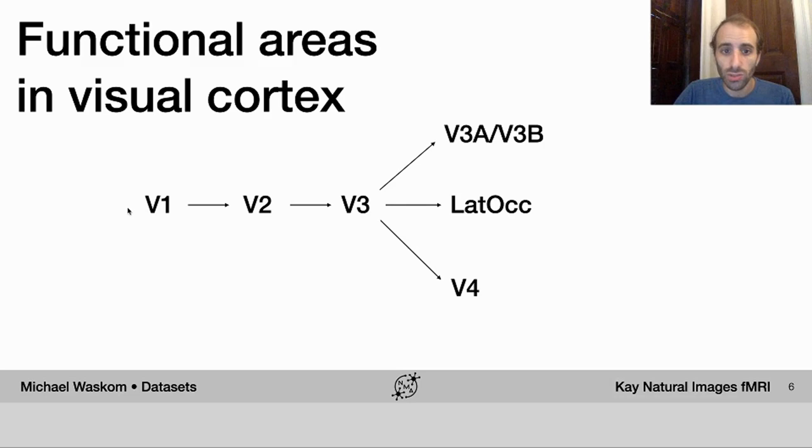So there are early visual areas, V1, V2, and V3, that are thought to respond to relatively simple features of stimuli, such as the spatial frequency information that the Gabor wavelet pyramid model captures.